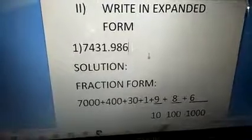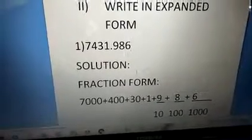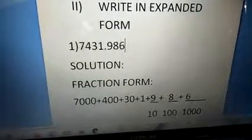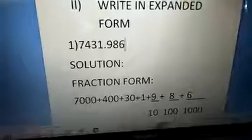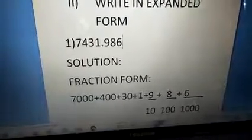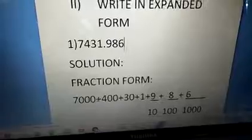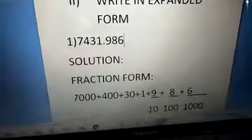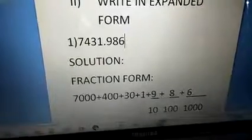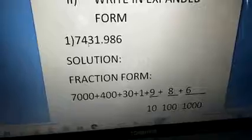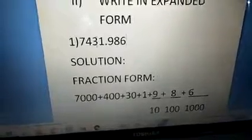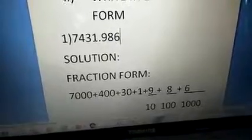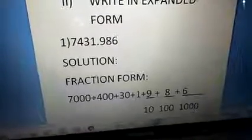First, we go through the fraction form, children. Listen. Then — how many thousands? 7000, you know. So first you write 7000 plus how many hundreds? 4 hundreds — so write 400. Then how many tens? 3 tens — so 30. How many ones? Only 1 here. So plus 1.